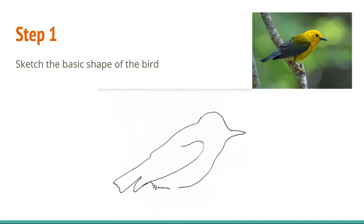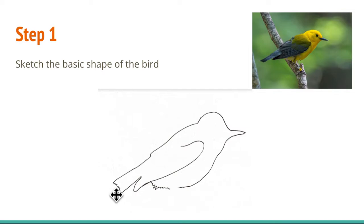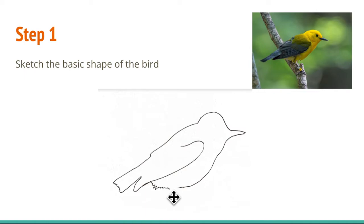Now we'll draw the bird. The first step is to sketch the basic outline of the bird. I like to start at the tip of the beak and then draw down the stomach. The head in this bird kind of gently curves up and then down, and then there's a slope down to the end of the tail, where you can choose to draw the little details on the tail. The wing curves up and then curves back down, and there's also some detail with feathers and under tail coverts. Right now I'm leaving a gap for the feet because we'll get back to that in a later step.